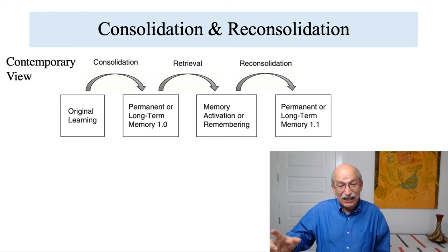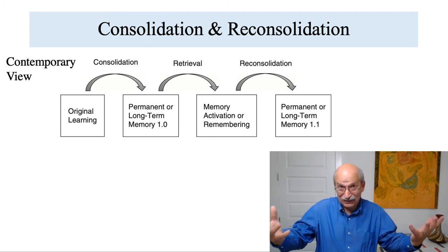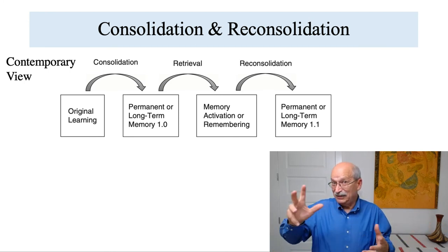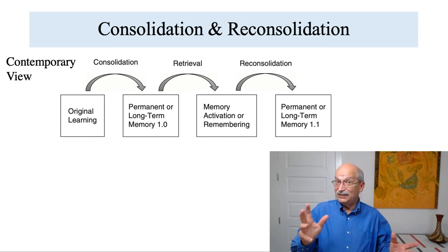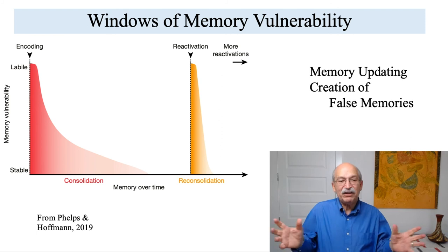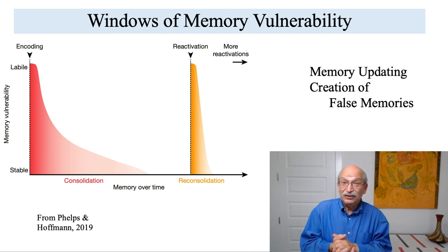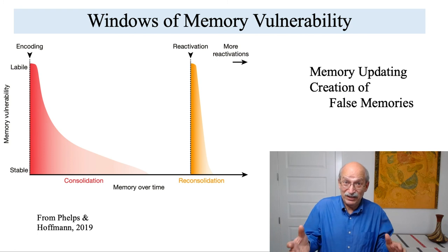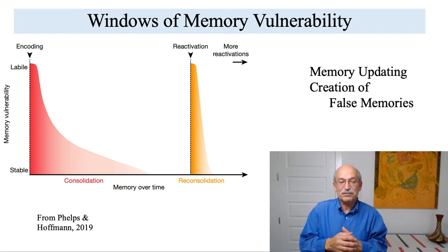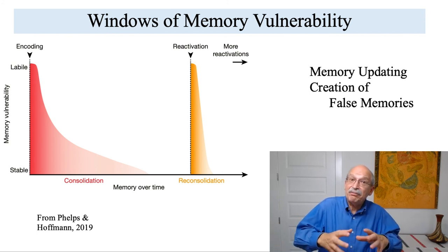And this process is iterative, so that the next time you retrieve the information, the information also becomes malleable, susceptible to alteration, and then it becomes malleable for reconsolidation. The next slide is a figure taken from a recent article by Phelps and Hoffman, in which they reviewed the reconsolidation and memory updating research. In this figure, Elizabeth Phelps and Hoffman illustrate periods when a memory is subject to modification.